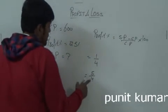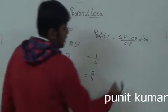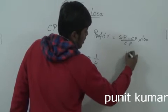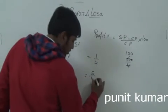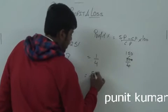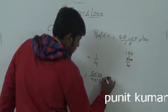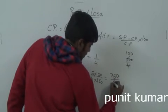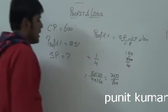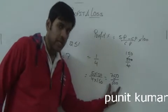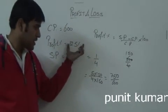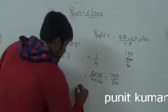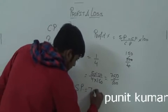Now, CP ratio is 4 and the actual CP is 600. So divide 600 by 4 to get 150 per part. Then multiply by 5 to get the SP: 150 into 5 equals 750. So if your CP is 600 and you need 25% profit, your SP comes out to be 750 rupees.